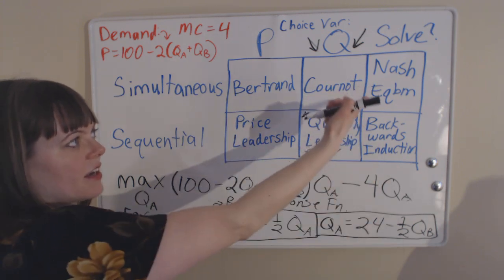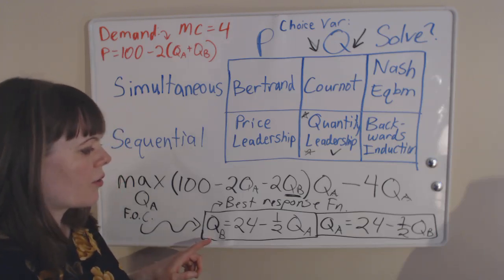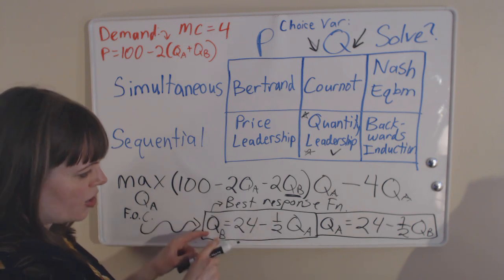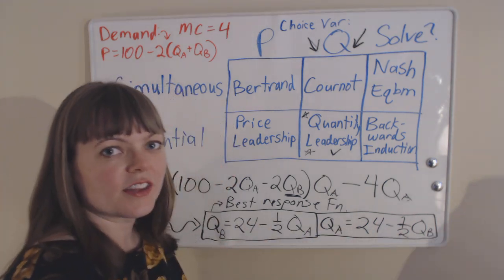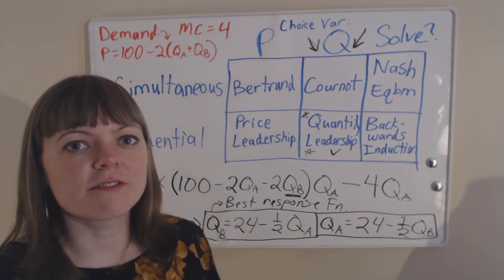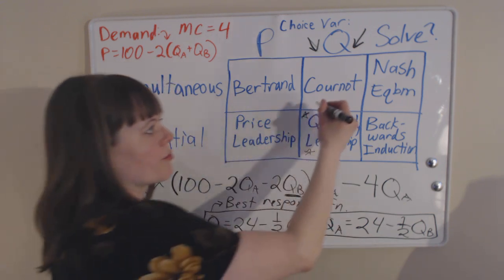If it's a Nash equilibrium we're looking for, we're just going to plug these into one another. So two equations, two unknowns. You can just plug in QB right there. And now this whole equation is in terms of QA, and you can solve it. You can go back and plug in your solution for QB over here, and that'll fully solve the Cournot equilibrium model.